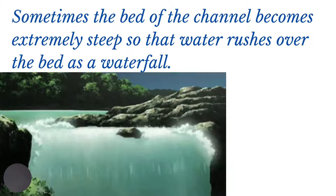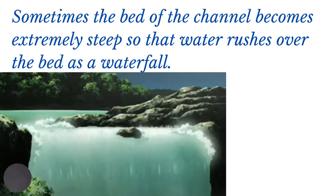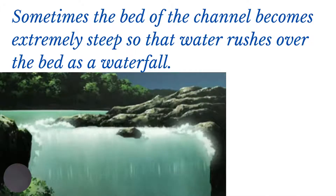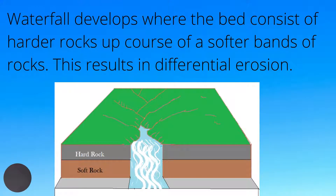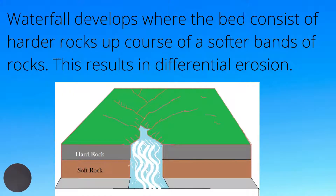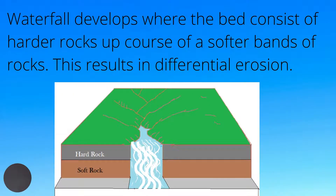Another feature found in the upper course of the river is a waterfall. A waterfall can be identified where the river flows rapidly over a bed which has been steepened. The waterfall develops where the bed consists of harder rocks on top of softer rocks. This will result in differential erosion, which means that erosion is taking place at different rates for different types of rocks.